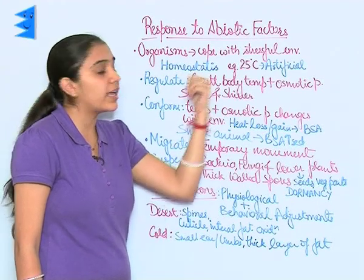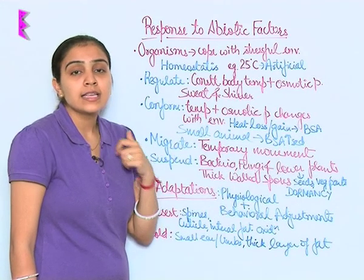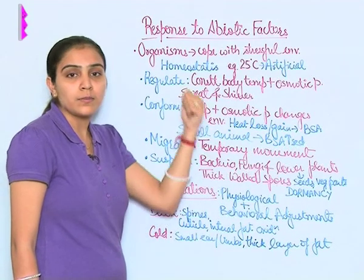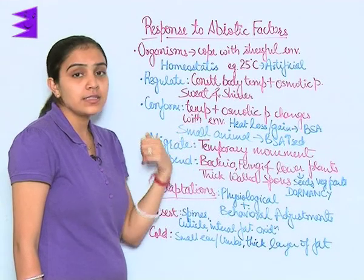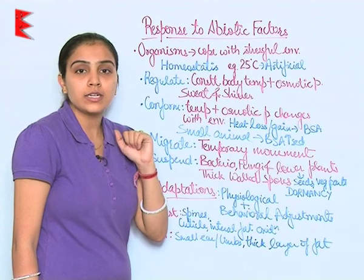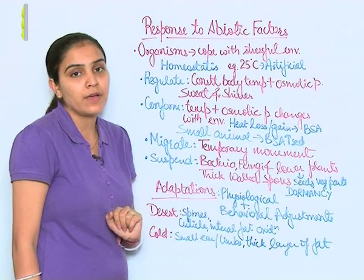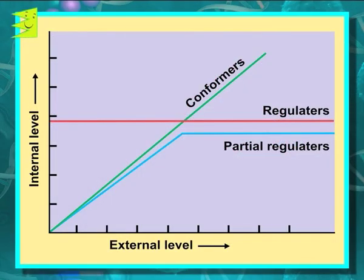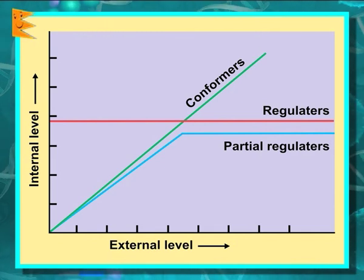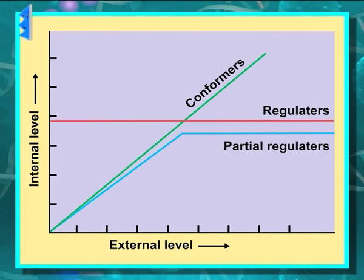Certain organisms are not able to do homeostasis because it is an energetically expensive process. The various methods for maintaining a constant internal environment include: first, regulators. Regulators maintain constant body temperature and osmotic pressure, and are also known as thermoregulators and osmoregulators.